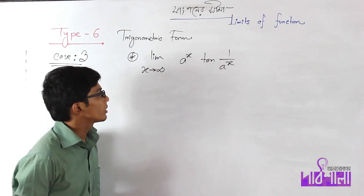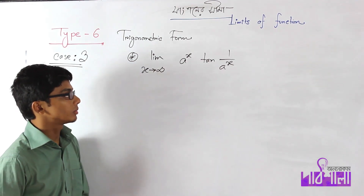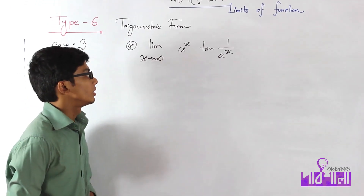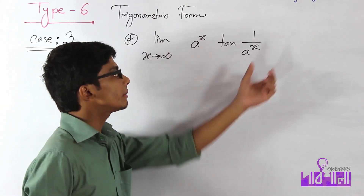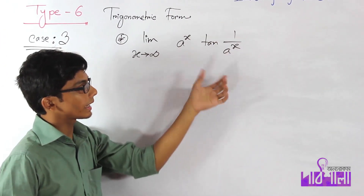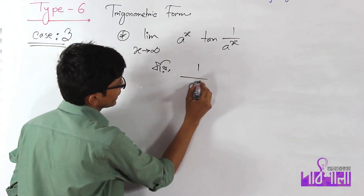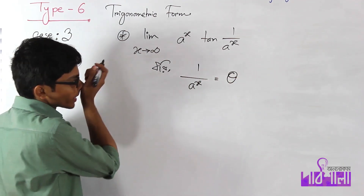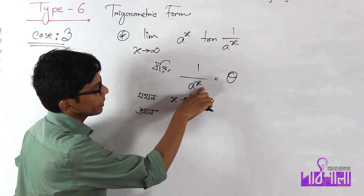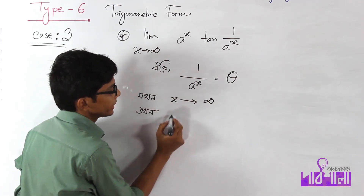We will see this one. When x tends to infinity, e to the power x tends to infinity. So 1 by e to the power x means 0. So the limit x tends to infinity gives us 0, and this is the limited conversion where the infinity limit becomes 0.